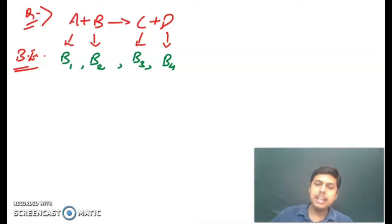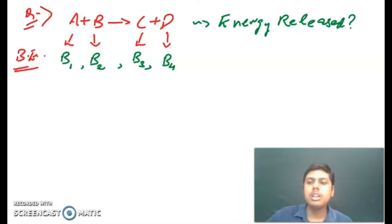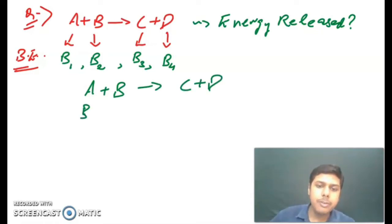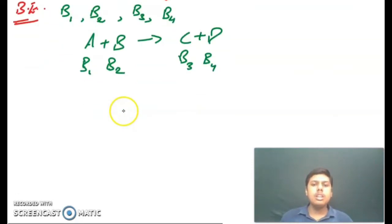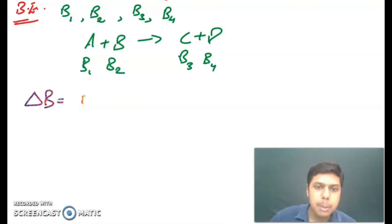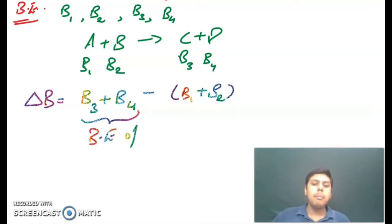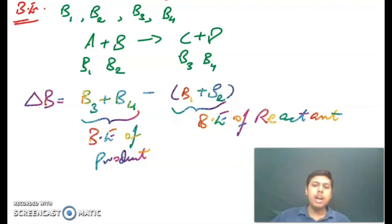We have to find the energy released in the reaction. The energy released is B3 plus B4 minus B1 plus B2. That means B3 and B4 represent the binding energy of the products, and B1 and B2 represent the binding energy of the reactants. When we subtract the binding energy of reactants from that of products, we can easily find the energy released.